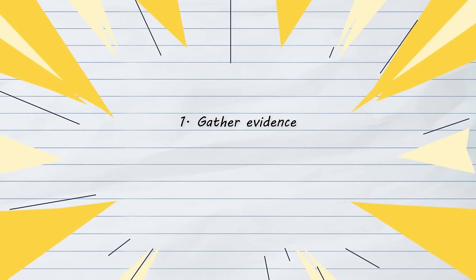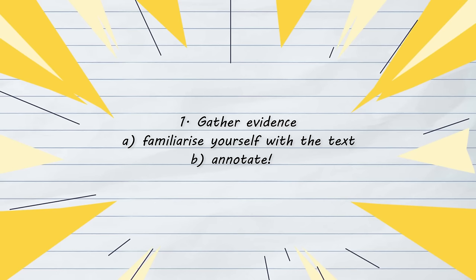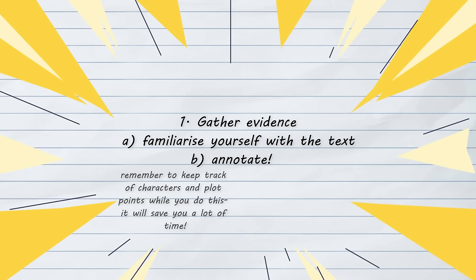So now that we know what analysis is and we understand five different types of arguments and four lenses, how do we put it all together? Before you write anything you want to make sure that you know what you're talking about, and the best way to do this is by gathering evidence, which is a process that I split into two parts. First you'll want to familiarise yourself with the text, so read the entire thing at least once without annotating it. Once you've finished your first read-through you can finally reread with all of your themes and lenses in mind and annotate while you do as well.